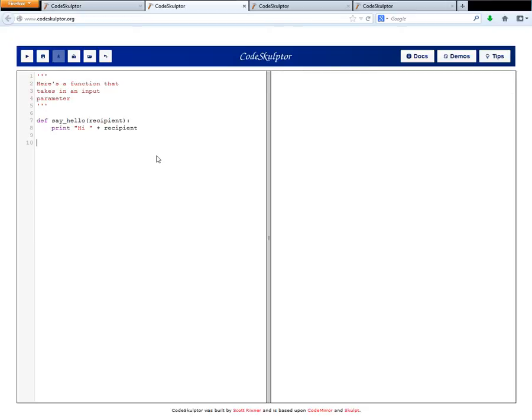All right, let's look at another function. Here I have a function that takes in an input parameter. My simple function is called say hello, and it takes in one parameter, and I've named it recipient. And it's a pretty simple function. It just prints the output out to the console. So let's go ahead and test this function. So I'm going to press the play button here. Oh, and I get an error here. So let's see what this error says. It says type error say hello takes exactly one argument, and zero for a given.